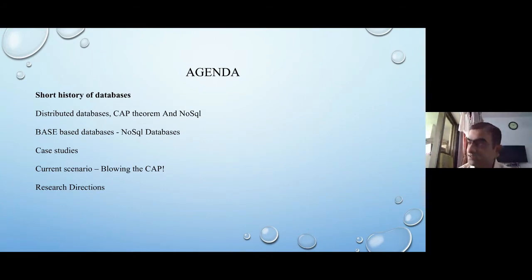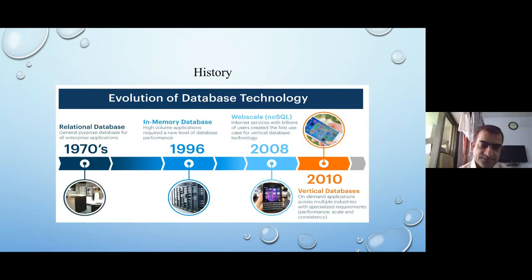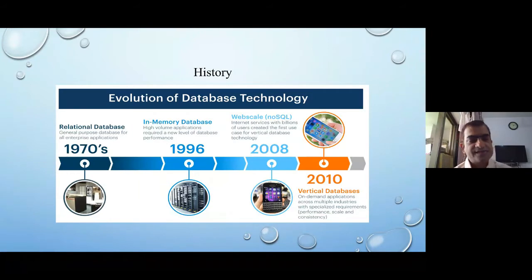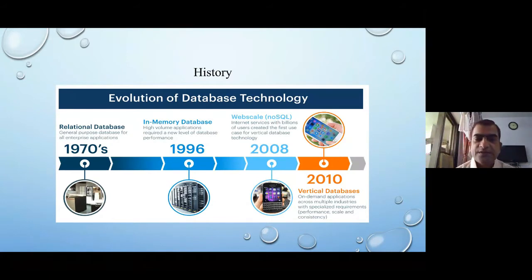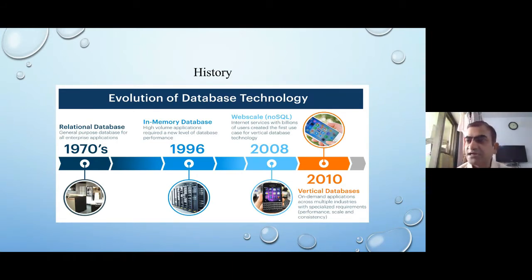Let me start with the history of databases. We are all aware of the basic things about databases and database management systems. As a matter of completeness we will start with history and then move towards distributed databases and the NoSQL movement. From 1970 onwards we'll talk about this, because before that relational systems were not there and people were working with flat files. From 1970 onwards we have a very strong database management system — the relational database management system — which we are still using today.